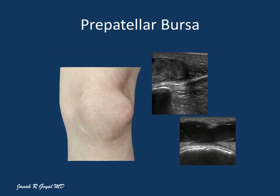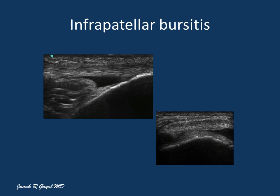Here is a patient with enlargement of the pre-patellar bursa with heterogeneous deposits due to hemorrhage in the bursa. Here is also a sonographic image of a patient with deep infrapatellar bursitis. Here is the patellar tendon, tibial tuberosity, and enlargement of the deep infrapatellar bursa on the long axis scan and the short axis scan.